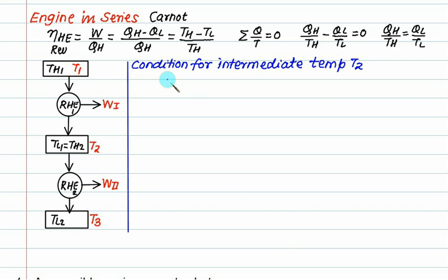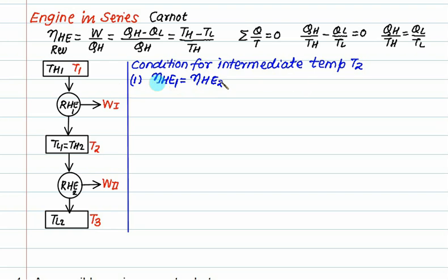We want to find the condition for intermediate temperature T2 in two cases. In the first case, assume the efficiency of both heat engines is the same: eta_HE1 equals eta_HE2, which also implies equal work. The efficiency formula for engine one is T_H minus T_L1 upon T_H, where T_H1 is T1 and T_L is T2, giving efficiency equals T1 minus T2 divided by T1.